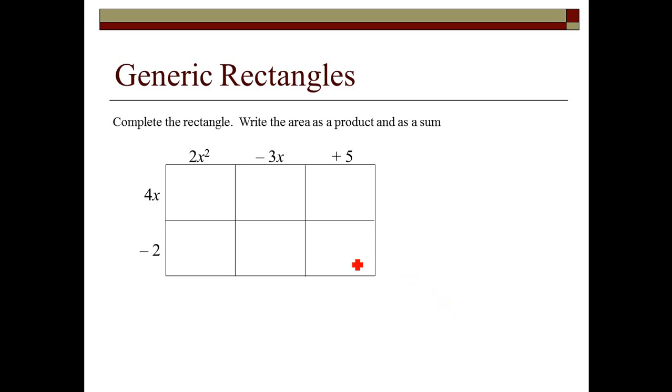Each of these individual squares that you see right here, they're all rectangles. We're going to define the area of this. I'm going to multiply length times width. So it's 2x squared times 4x gives me 8x cubed. Then I'm going to do 2x squared times negative 2. Well that would be negative 4x squared.